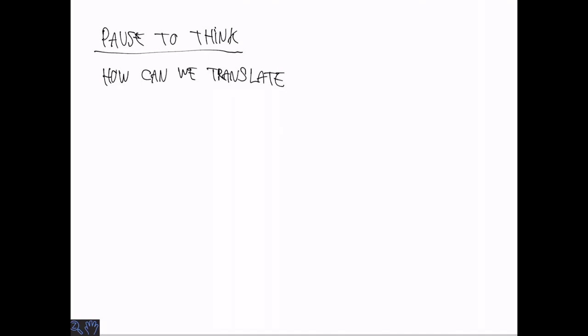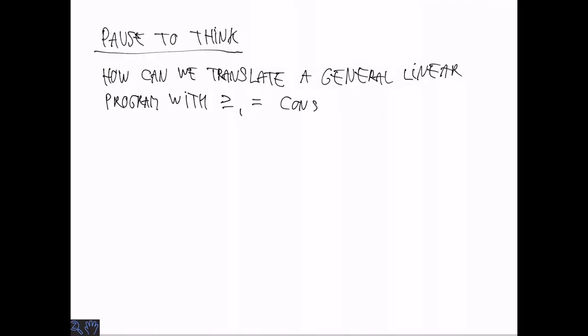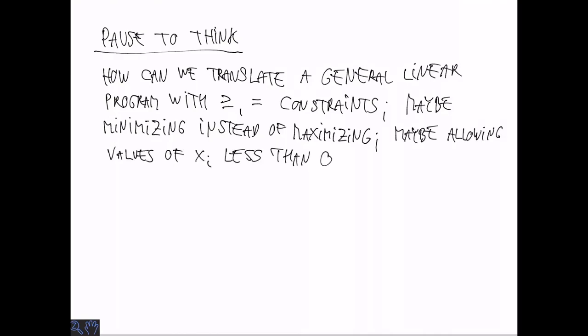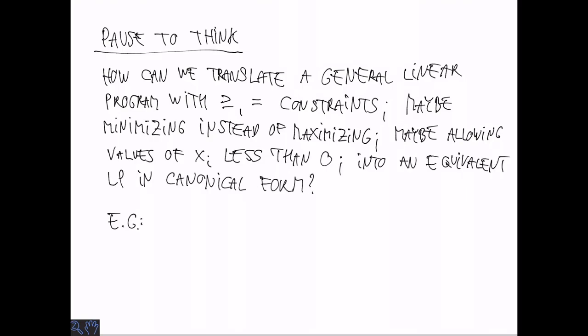Finally, it can be that the optimal solution doesn't exist, either because the feasible region is unbounded or because there is no feasible solution at all. What we just saw was the canonical form. In general, any linear program can be translated into canonical form. A general LP might have greater-than-or-equal-to or equality constraints, or we may want to minimize instead of maximize, or allow values less than zero. But it's always possible to translate this into an equivalent LP in canonical form.